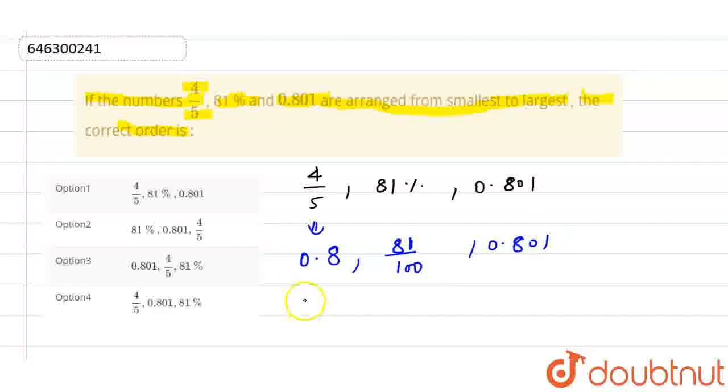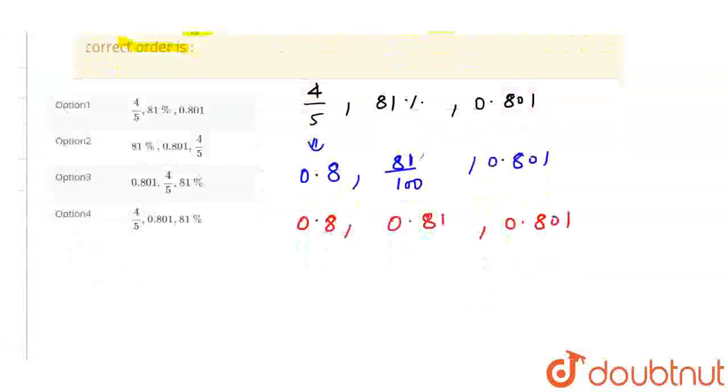So what are the final values? The first value is 0.8. This is 81/100 which when we divide by 10 power 2 gives us 0.81. And the last value is 0.801.